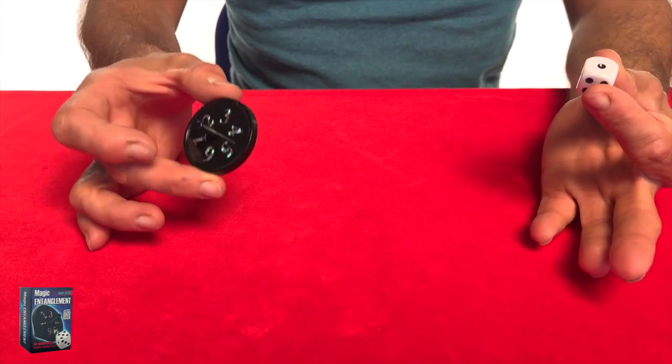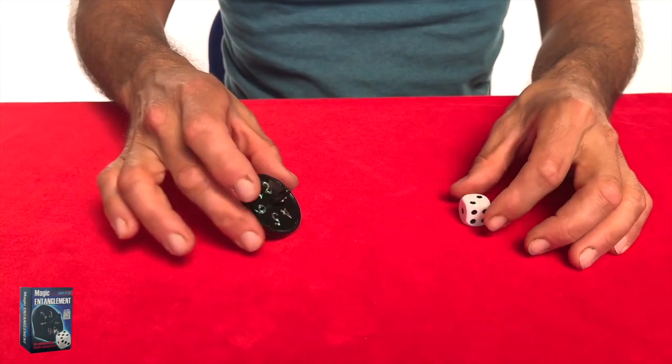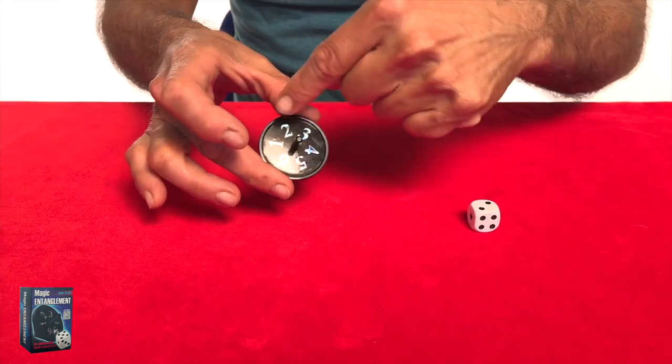Two objects can come into connection through magic. This is a die and this is a spinning top that has the same numbers as the die.